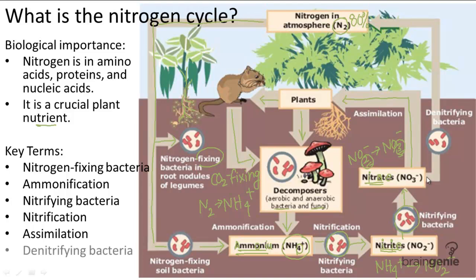The second path the nitrogen cycle can take after nitrates is back to the atmosphere. In this case, you need denitrifying bacteria. Think of the D as kind of undoing — reversing the process — finishing up the cycle by taking nitrates, NO3-, and converting them back into nitrogen gas, N2.